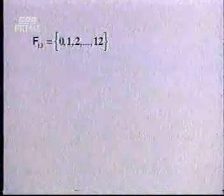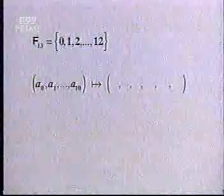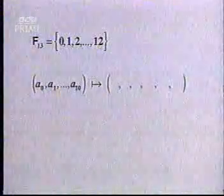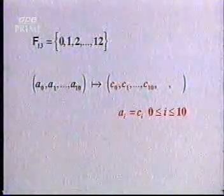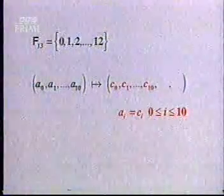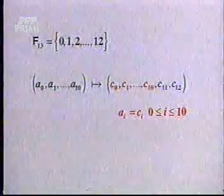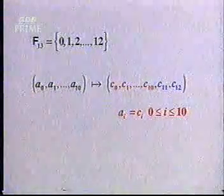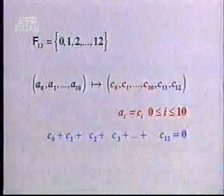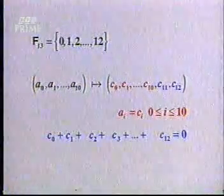Let us assume the music is given as the string A0 to A10. And as before, I will add some extra symbols. The symbols C0 up to C10 are the original symbols indicated in red, and two more will be added on in blue. Here is the rule: the sum of the symbols C0, C1 up to C12 should be 0.